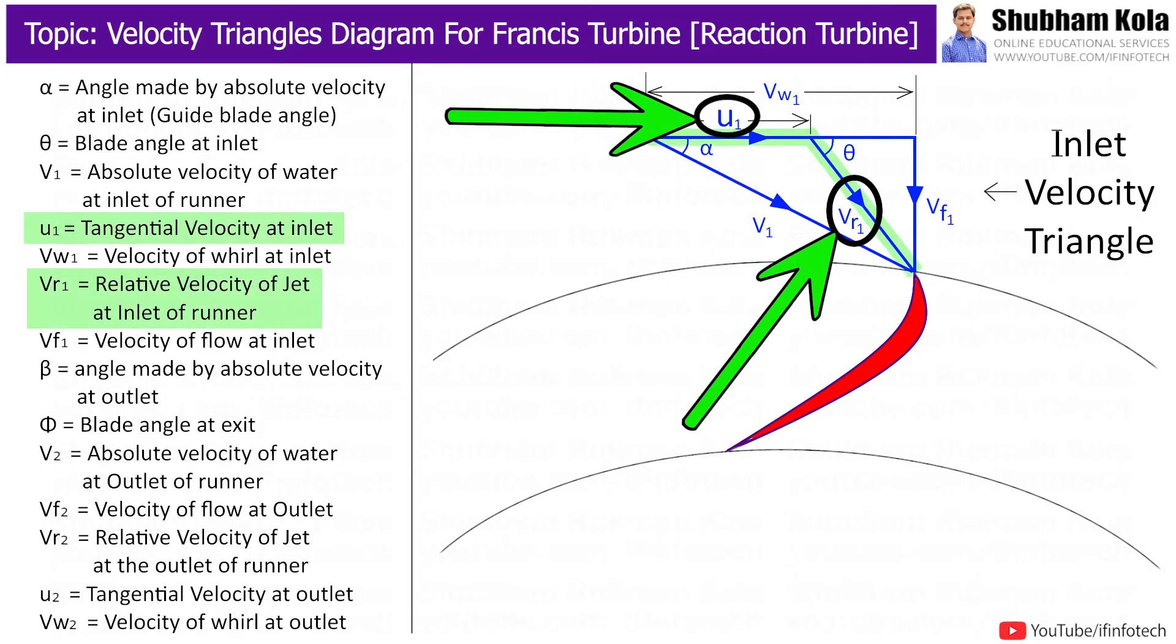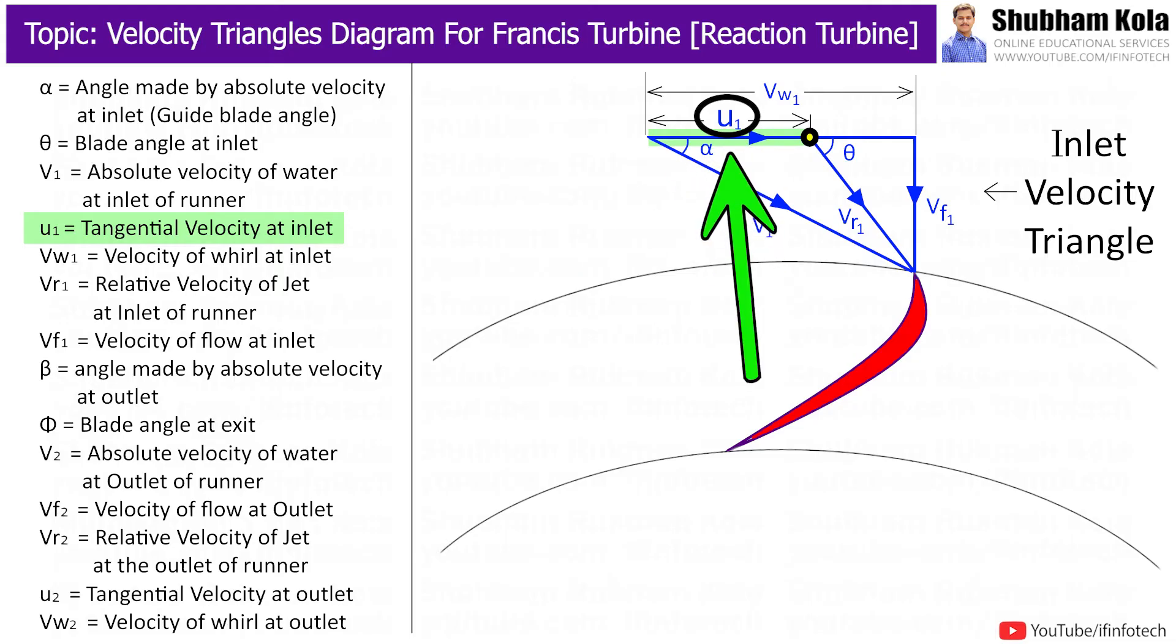One component is horizontal component and other is vertical component. So first we draw one horizontal line and this line is known as velocity of flow at inlet, i.e. Vf1. Now, in this diagram, we add another two velocities. So on the line of Vw1, up to certain point, we are indicating velocity of whirl at inlet and I will connect these two points and it will represent the relative velocity of jet at inlet. And the angle of relative velocity with horizontal direction is indicated as theta and it is known as blade angle at inlet.